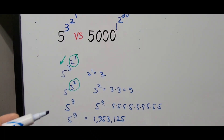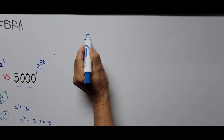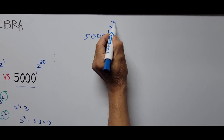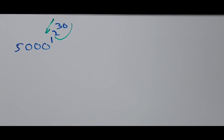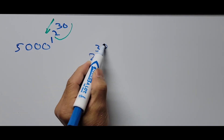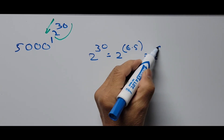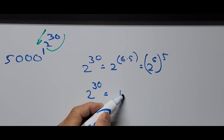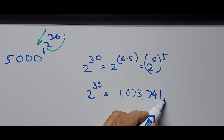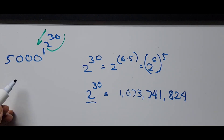Now we go back to the right side. The base there is 5,000, raised to the power 1 to the power 2 to the power 30. Starting computation from the top down, the first to consider is 2 raised to the 30th power. This can be written the same way as 2 to the 6th raised to the 5th. The value of 2 to the 30th power is 1,073,741,824.